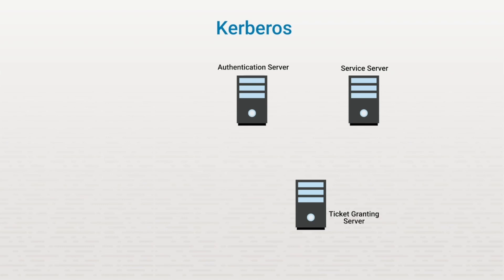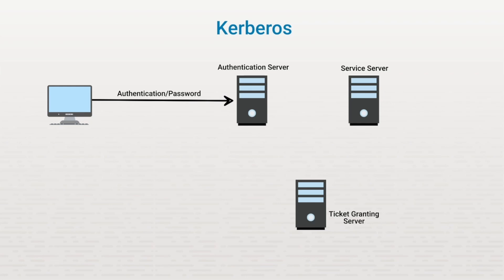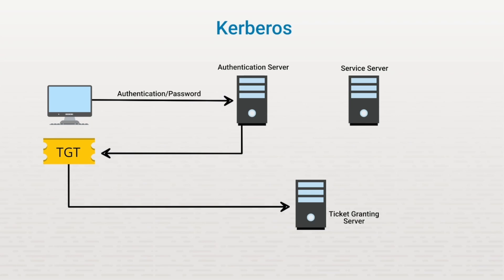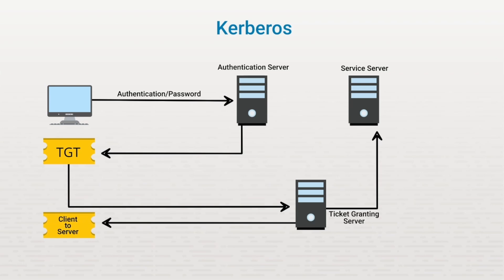Kerberos authentication works like this: a user sends their authentication credentials — a username and password — to the authentication server. The authentication server validates those credentials and issues the user a special ticket called a ticket-granting ticket. This ticket-granting ticket simply says this is an authorized user allowed to request another ticket — essentially a ticket that can be used to get a ticket. When a user needs to access a specific service, they take the ticket-granting ticket and show it to the ticket-granting server, saying their identity is validated and requesting authorization to use the resource. The ticket-granting service checks its database to determine whether the user is allowed access, and if so, issues a special ticket called a client-to-server ticket.